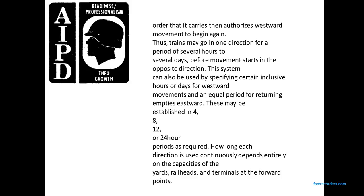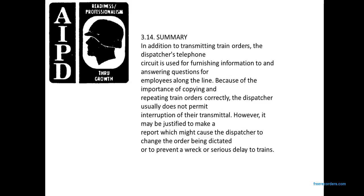The system can be used by specifying inclusive hours — for example, westward movement for an equal period as eastward movement — established on four, eight, twelve, or twenty-four hour periods as required. How long each direction runs continuously depends on the capacity of yards, railheads, and terminals at forward points. In summary, in addition to transmitting train orders, the dispatcher telephone circuit furnishes information and answers questions from employees along the line. Because of the importance of correctly copying and reading train orders, the dispatcher usually does not permit interruption during transmission.